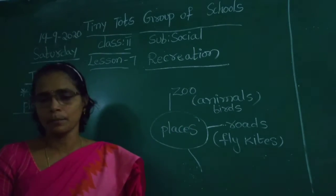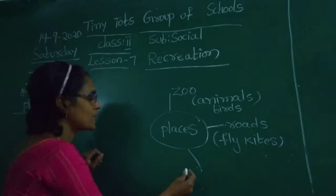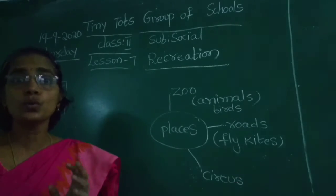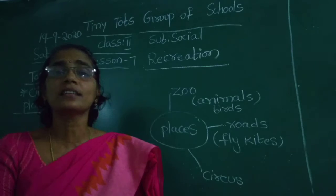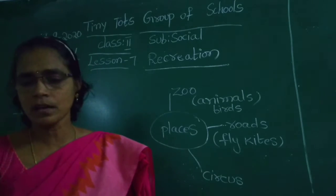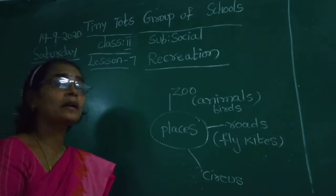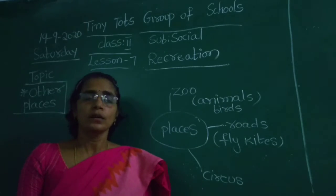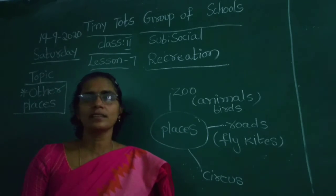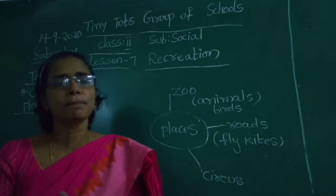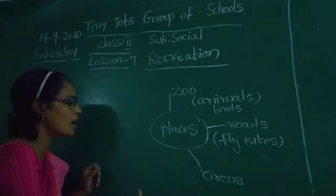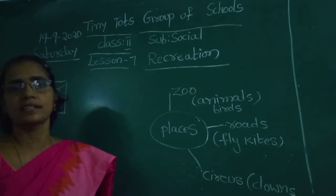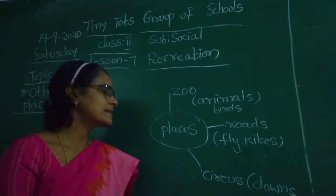And circus — the third place is circus. Here, clowns and jokers will be there and they give lots of happiness and fun. Both men and women perform many activities: jumping through a ring, walking on threads, and playing with animals. We can see many things done by men and women. They are called clowns. They perform lots of activities. This is about circus.